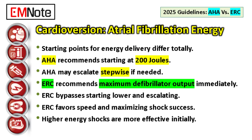Let's switch from drugs to electricity — synchronized cardioversion. For AFib, the AHA recommends starting at 200 joules, with the idea of potentially escalating stepwise if needed.